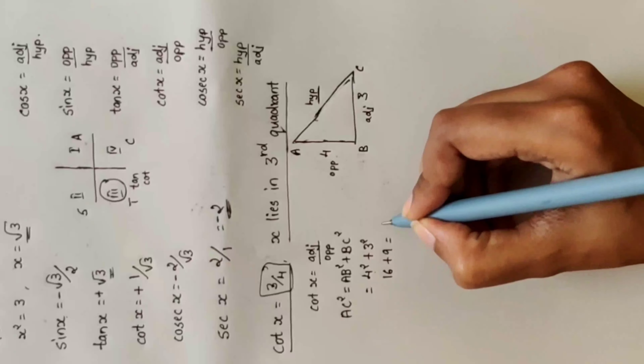Ignore the minus sign for the triangle side calculation — a minus just states that in the second quadrant the tan value is negative. For the hypotenuse: AC² = 5² + 12² = 25 + 144 = 169, so AC = 13. Hypotenuse = 13.